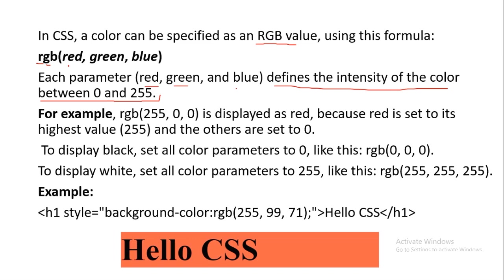Whenever you give a color using RGB, red, green, and blue can have a value starting from 0 to 255. So in this example, we have given RGB(255, 0, 0). This means red will have a value of 255 — that means its maximum value. Green and blue are 0. So it will display red because red has the highest intensity. For black, set all the parameters to 0 — RGB(0, 0, 0) — and that particular font color will be black.